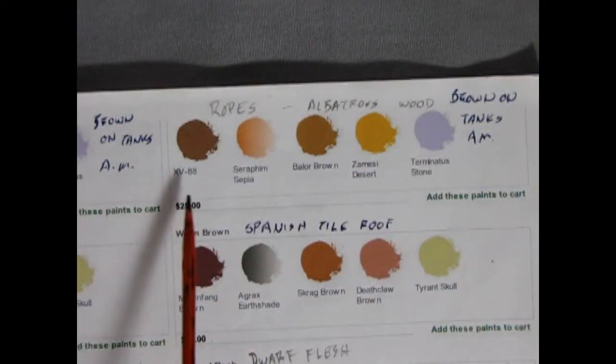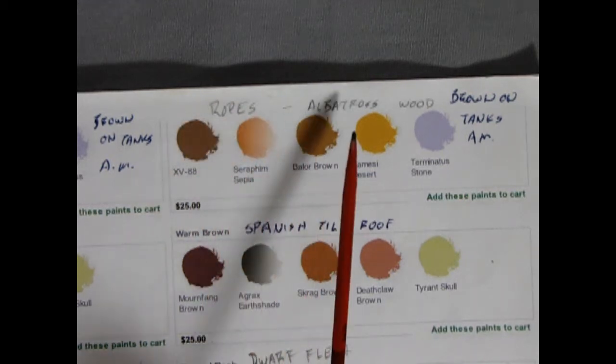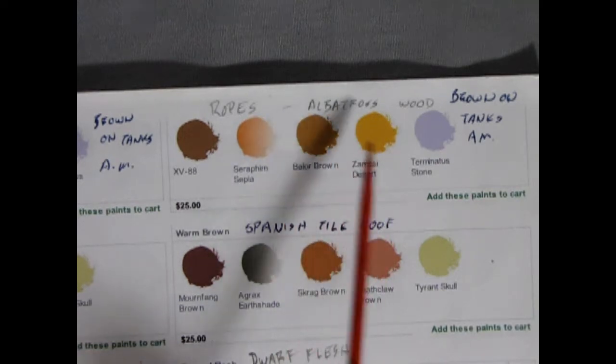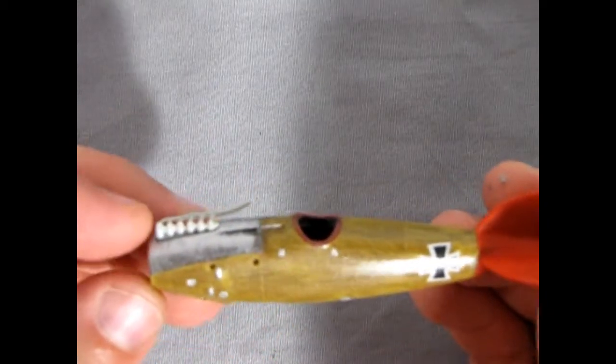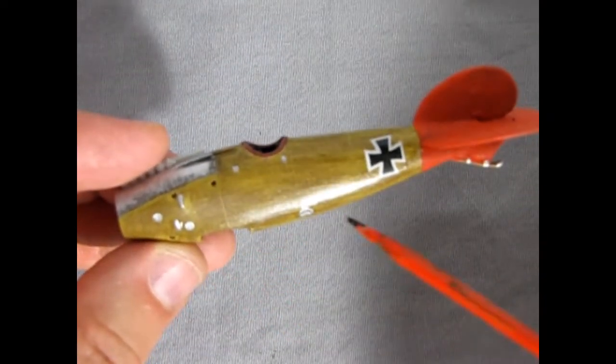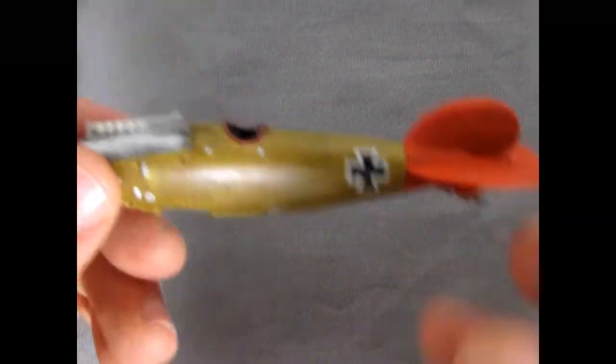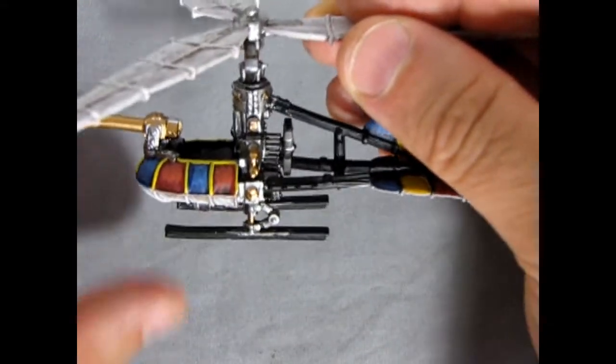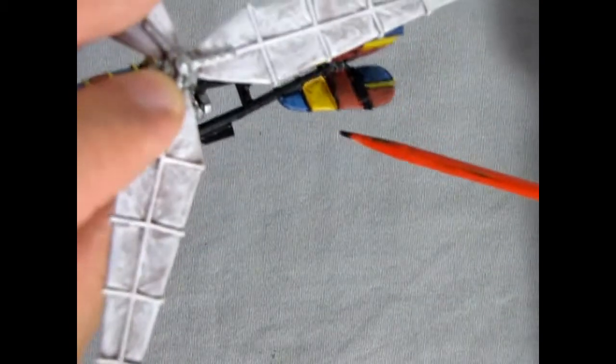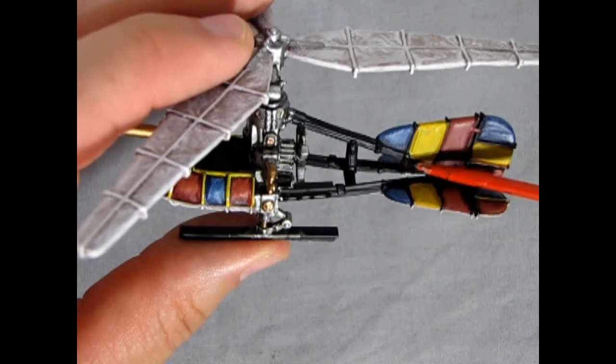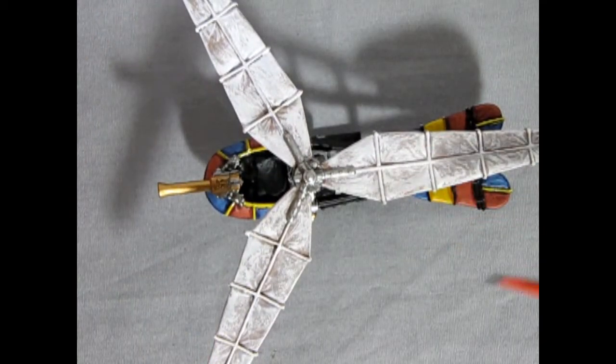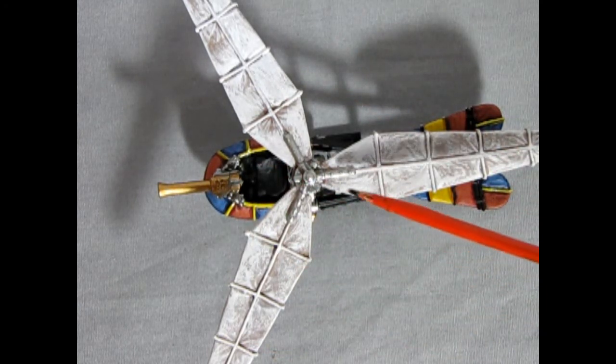Our next color palette comes from the XV-88 Crisis Battle Suit but I have marked it here also as ropes and albatross wood. That is XV-88, Seraphim Sepia, Baelor Brown and Zamestri Dust. This is a model kit that I was building of a World War One albatross and you can see that the bodies on the albatross were actually made out of plywood and this is the paint that I used to get the albatross wood coloring. It will look pretty good and I'm still not really sure what color to paint these straps in here.